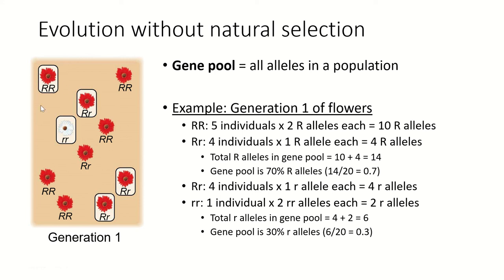All of our homozygous dominant individuals have two copies of the allele. We have five homozygous dominant individuals, giving us ten big R alleles. We have four heterozygous individuals, each contributing one big R, giving us four more. So in total we have 14 big R alleles, which is 70% of the gene pool. The heterozygotes also each contribute one little r, giving four little r's, and one homozygous recessive individual gives two more — for a total of six little r's: 30% of the gene pool.